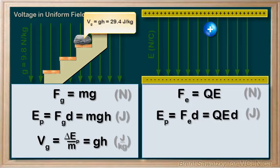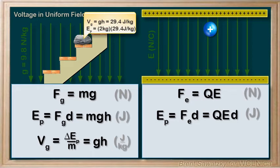So this potential doesn't depend on the mass. For example, our potential at this third step is 29.4 joules per kilogram. If it's a one kilogram rock, then one kilogram times 29.4 joules per kilogram, and the kilograms cancel, giving us 29.4 joules. If it were a two kilogram rock, then two kilograms times 29.4 joules per kilogram.